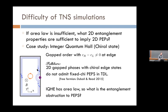There's a folklore going back a decade that if you have a 2D gapped phase with chiral edge states, it doesn't admit a fixed bond dimension PEPS representation in the thermodynamic limit. Proposed chiral PEPS have a chiral entanglement spectrum, but when examined closely they actually have algebraic correlations, so they shouldn't be ground states of gapped Hamiltonians. This has been proved for Gaussian PEPS by Dubail and Read in 2015, but in general there's no further proof.